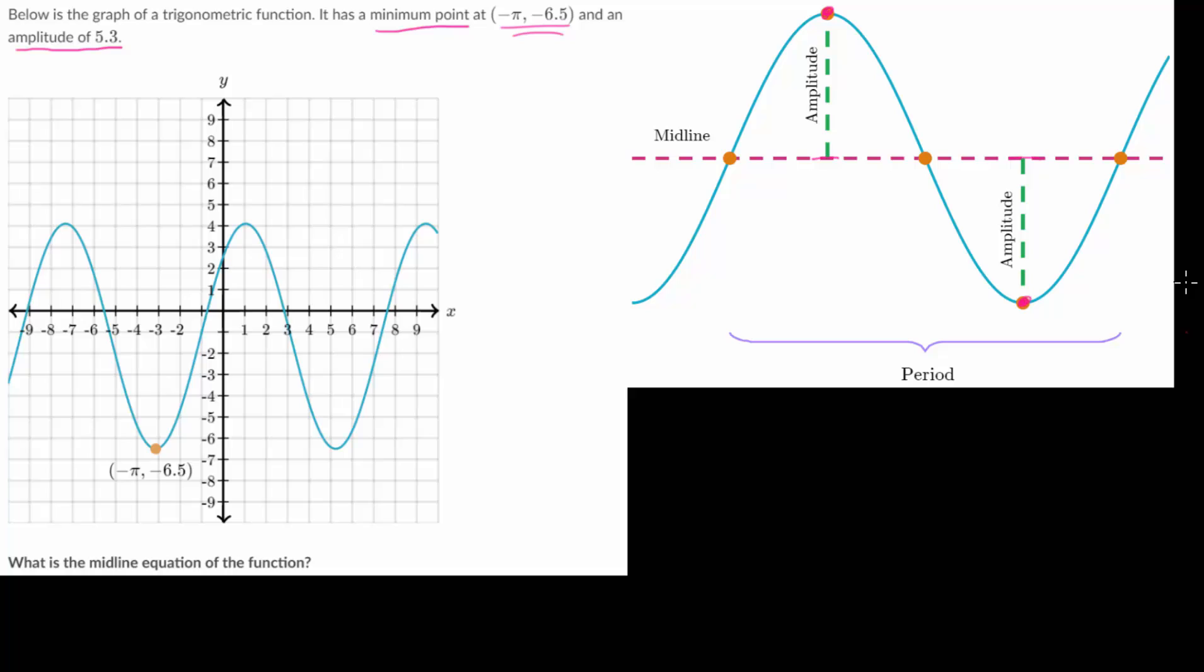And the period is essentially just the interval on which the function repeats itself. And every period we would essentially just get this wave here or this section of the wave and that would repeat infinitely many times. Now for this problem we don't need to involve the period we just need to find the midline given knowledge about a minimum point and the amplitude.